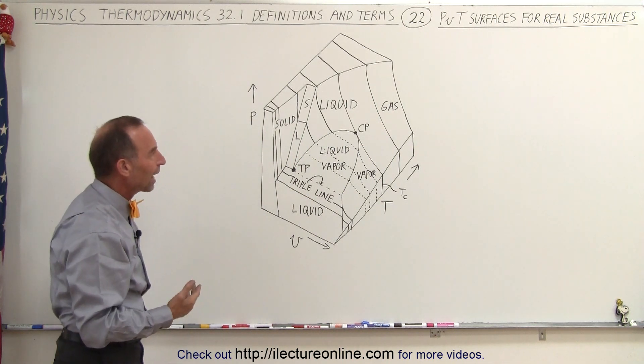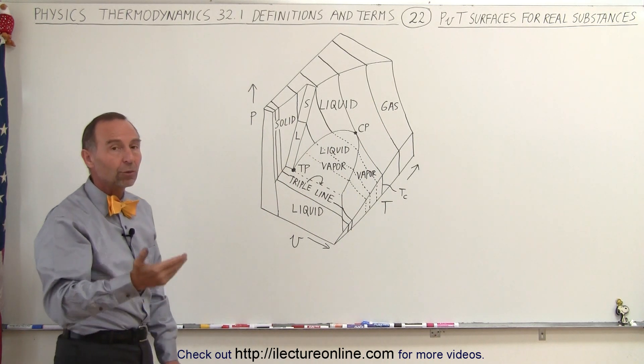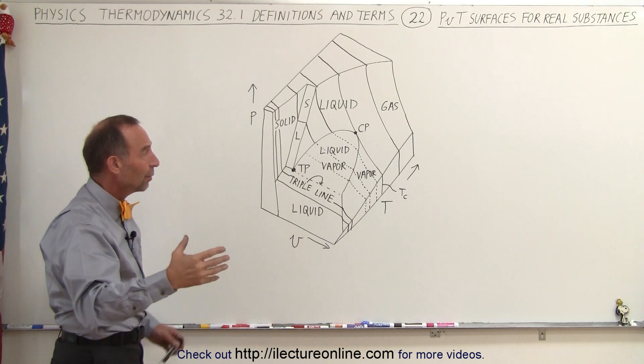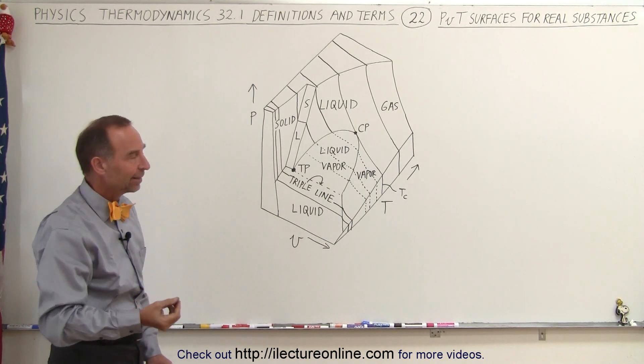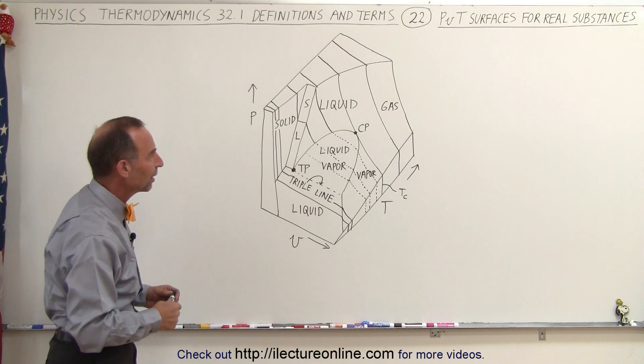Carbon dioxide is one of those gases where it sublimates, going from solid to gas, and when you compress it enough, it goes from gas back to solid, bypassing that liquid state. That would be one example of that.